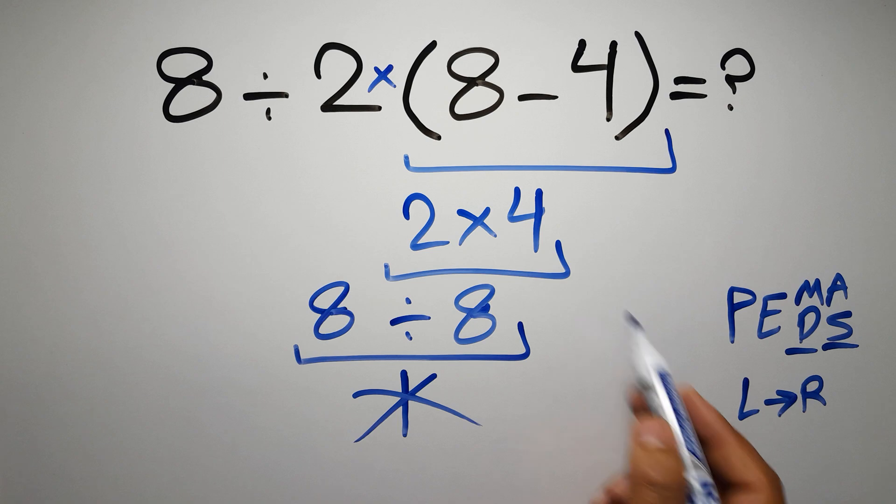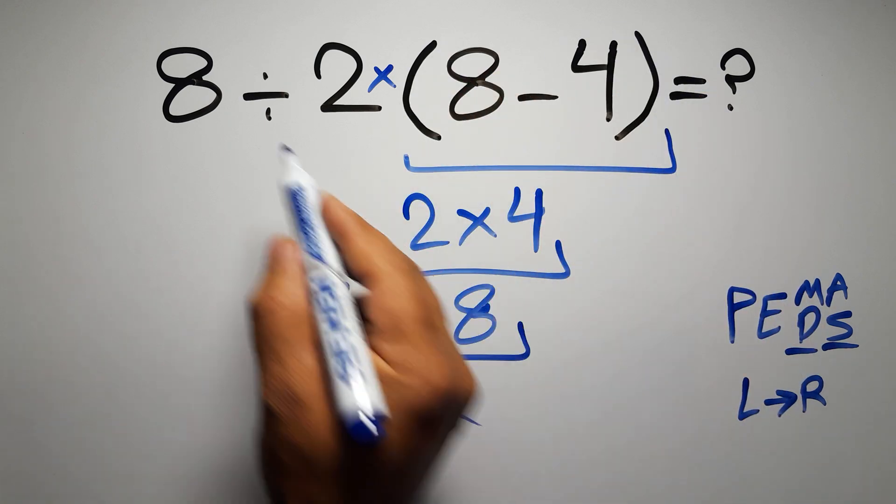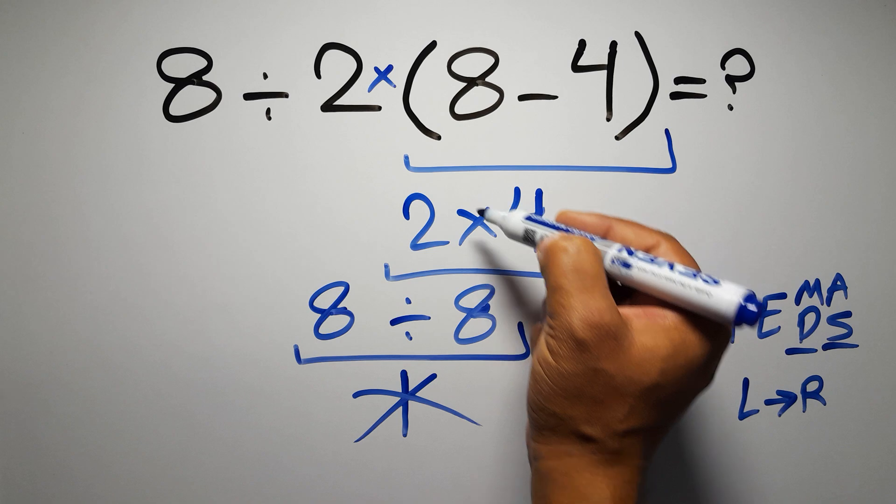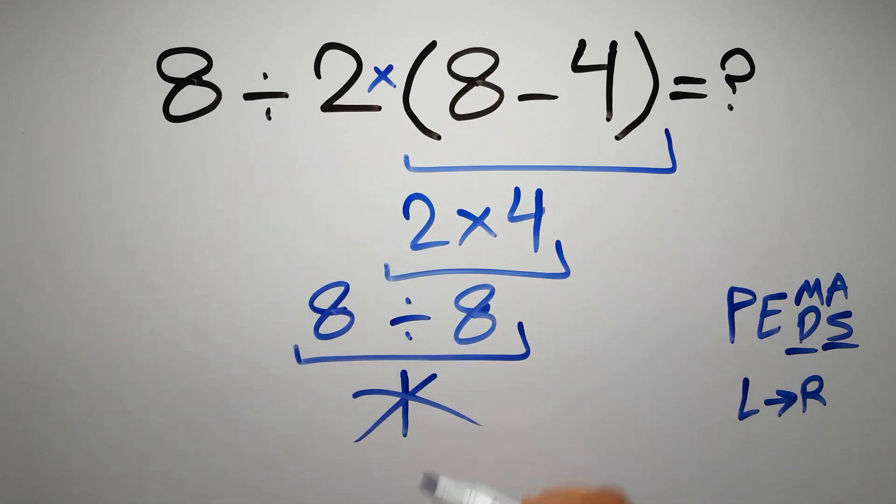So according to the PEMDAS, first we have to do these parentheses, then this division, and finally this multiplication. If we do this multiplication before this division, it is wrong.